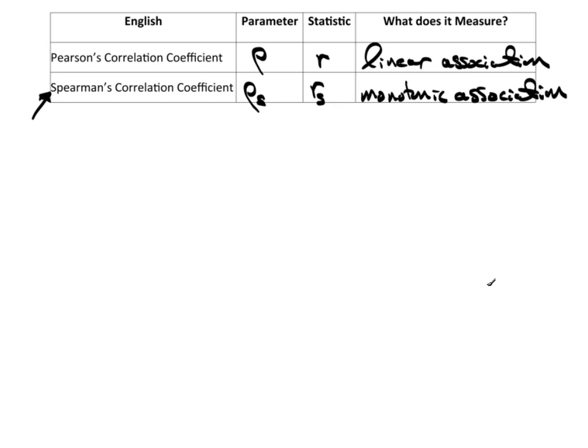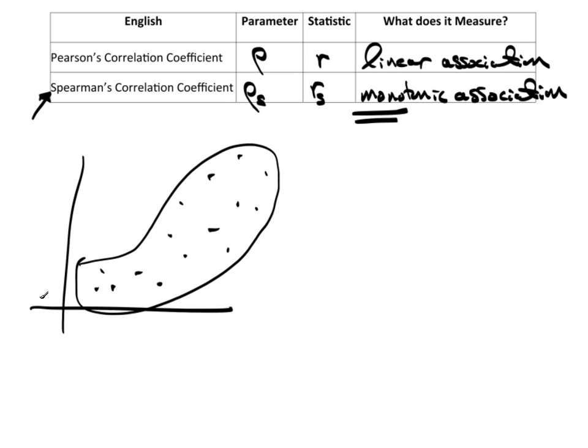So, just what is monotonic? Mono, meaning one. If I see something that looks like this, clearly, if I just loosely draw a line around the outside, I'm seeing like a banana shape. It's curved, but it's always going up. That would be monotonic. It's moving in one direction. This would be a positive monotonic association.